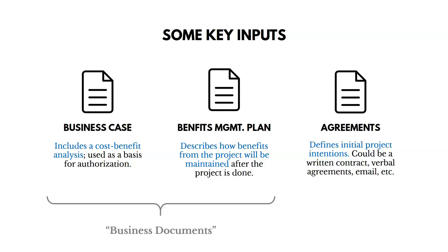There could also be a benefits management plan, describing how benefits from the project will be maintained over time — we want to make sure those benefits are sustained and last for a long time. Those two documents together are called business documents. The business case and the benefits management plan provide the business reason and business benefit for why we're kicking a project off. Another input could be an agreement — things like a written contract, a verbal agreement, or an email — anything that could be a basis for getting a project started. A project charter is still critical; we've got to have somebody signing off saying we can actually move forward with the work.